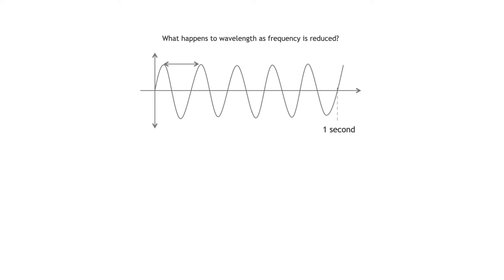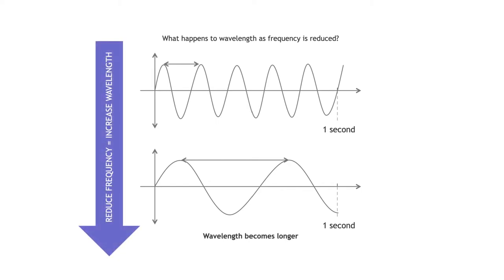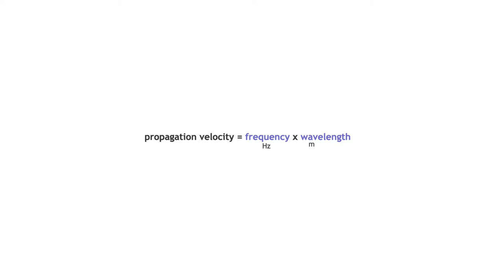Looking at a 5 Hz wave, if we reduce the frequency, the wavelength becomes longer. As frequency decreases, wavelength increases — and the inverse is also true: increasing frequency reduces wavelength. Frequency and wavelength are tied together in this key equation: propagation velocity equals frequency multiplied by wavelength. Frequency is measured in hertz, wavelength in meters, so propagation velocity is measured in meters per second.